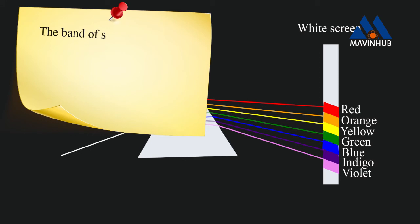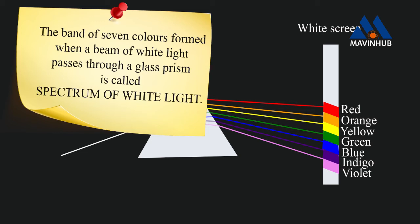The band of seven colors formed when a beam of white light passes through a glass prism is called the spectrum of white light.